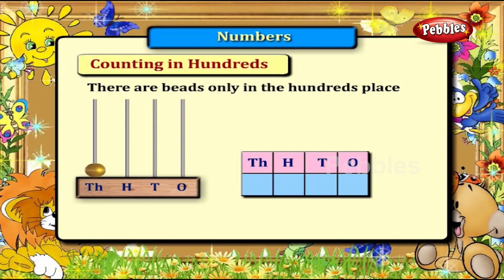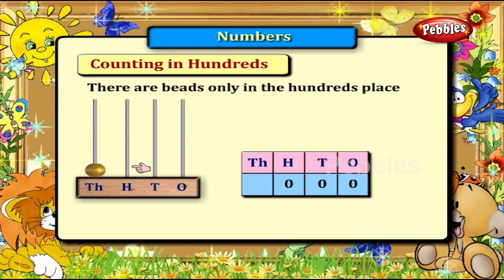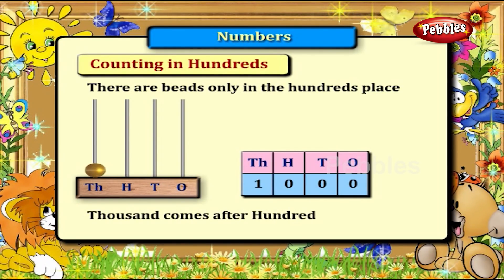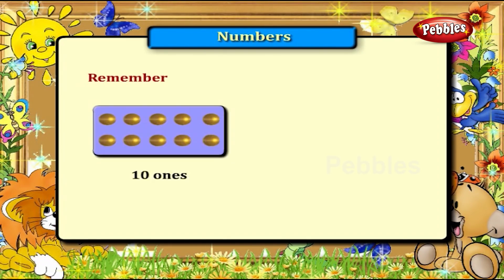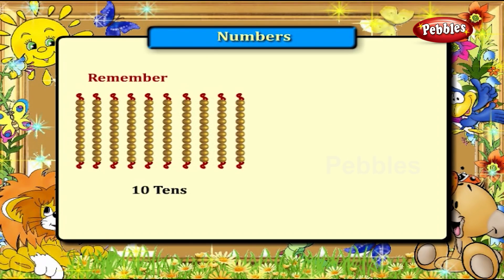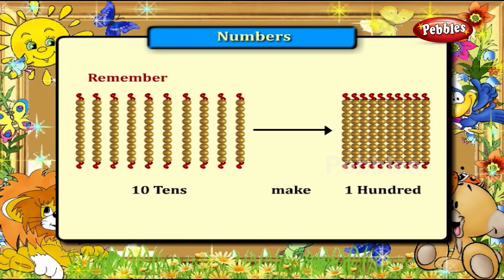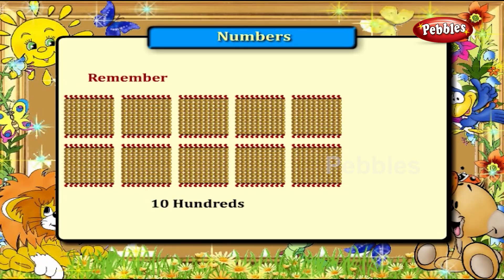Let us now see the representation on the abacus for 1000. There are no beads in the ones place, so write 0. There are no beads in the tens place, so write 0. There are no beads in the hundreds place, so write 0. Can you see one bead in the next place? That is the thousandth place. Thousand comes after the hundreds place. Remember: 10 ones make one ten, ten tens make one hundred, and ten hundreds make one thousand.